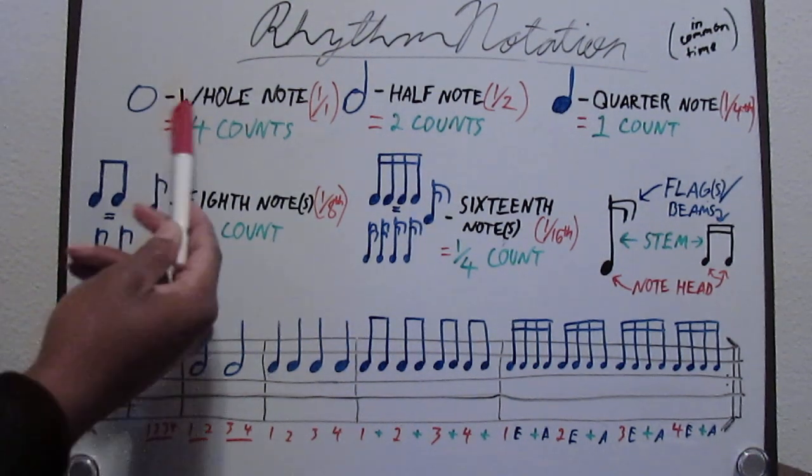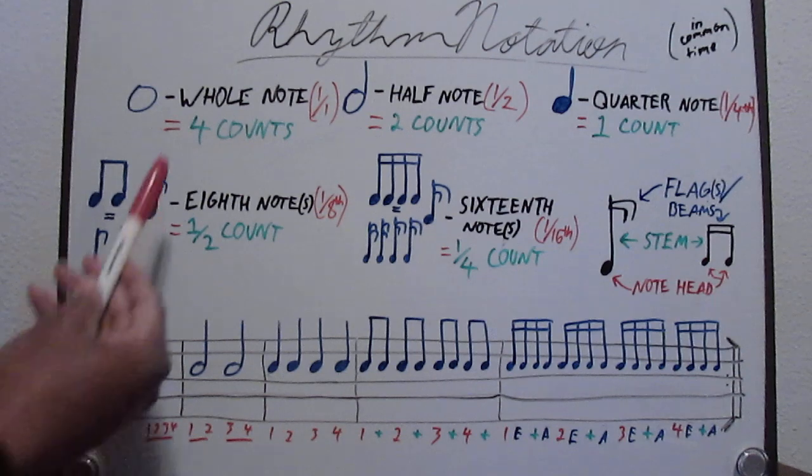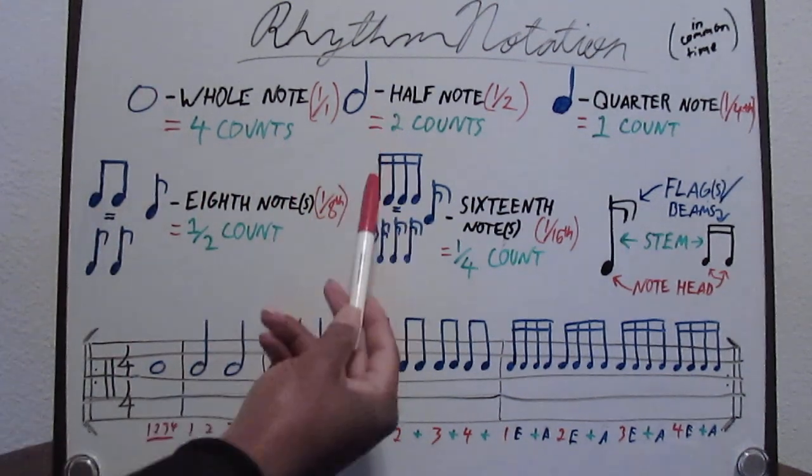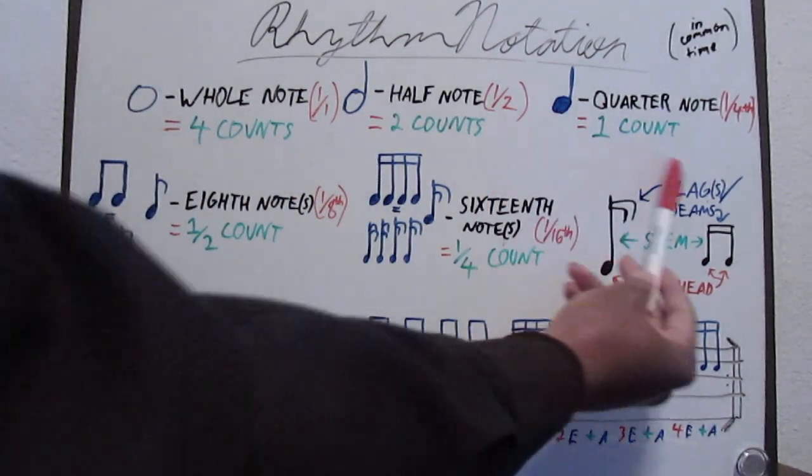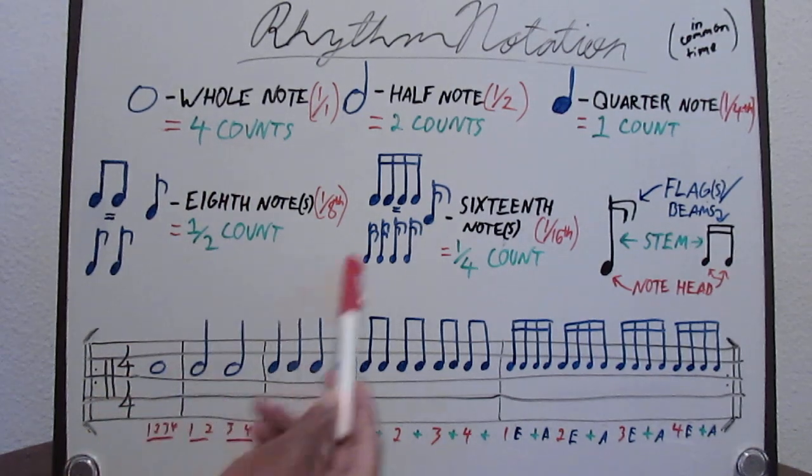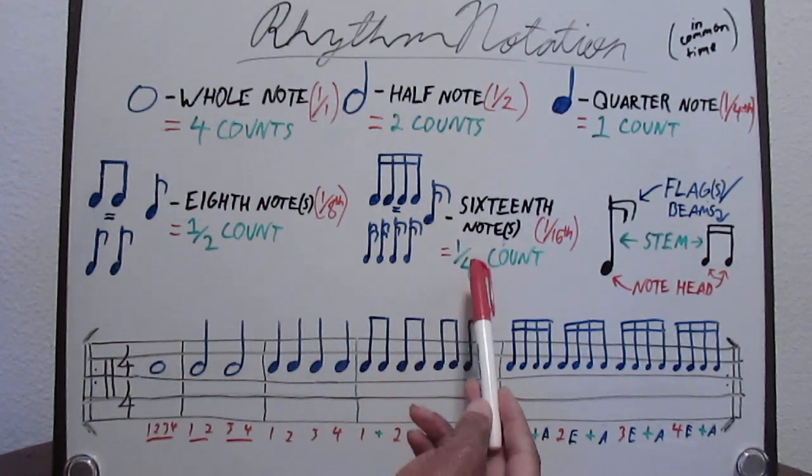We're going to have a whole note here as the first basic note. Going to get four counts. A half note is going to get two counts. Quarter note is going to get one count. Eighth note is going to get a half a count. And a sixteenth note is going to get one fourth of a count.